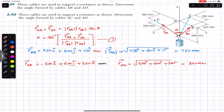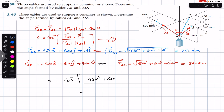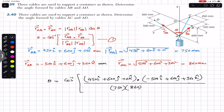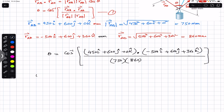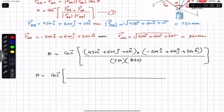Putting everything into equation one, theta equals cos inverse of: (R_AB · R_AD) divided by (|R_AB| × |R_AD|). R_AB is 450i + 600j + 0k, and R_AD is −500i + 600j + 360k, divided by the magnitudes 750 and 860. For the dot product, we multiply only the matching components: i with i, j with j, and k with k, since i·i = j·j = k·k = 1.